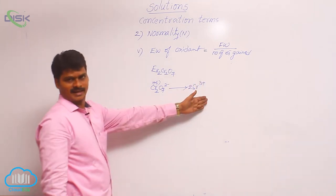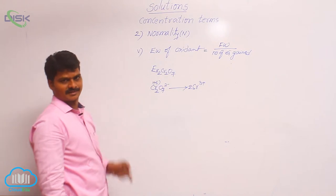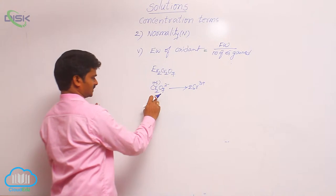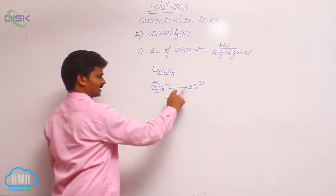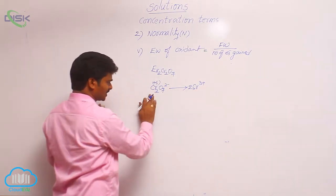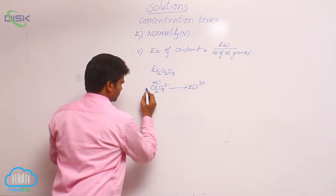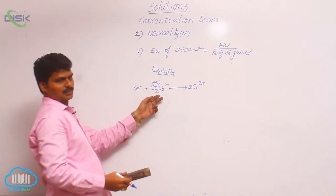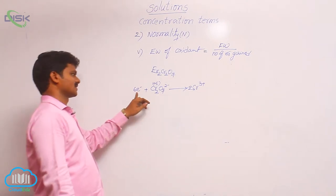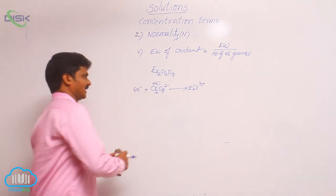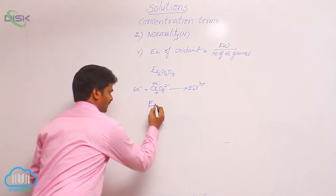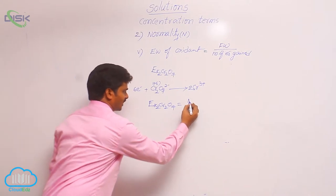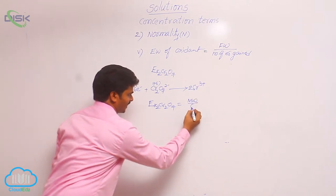So total oxidation number on one side is 2 × 6 = +12, and on the other side 2 × 3 = +6. That means 6 electrons are added, so one molecule involves 6 electrons. Therefore, the equivalent weight of potassium dichromate K₂Cr₂O₇ equals its molecular weight divided by N factor 6.